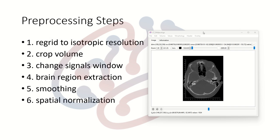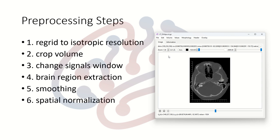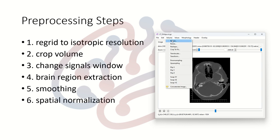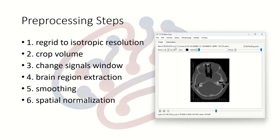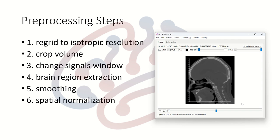The first pre-processing step is to regrid the image to isotropic resolution. For most acquisitions the voxel size XYZ resolution may not be the same, so it is better to regrid to isotropic so that spatial normalization is easier. Go to the Volume menu, click on Regrid, choose a resolution close to the original — here I choose one millimeter. You only need to put in one value and DSS Studio will regrid to that resolution.